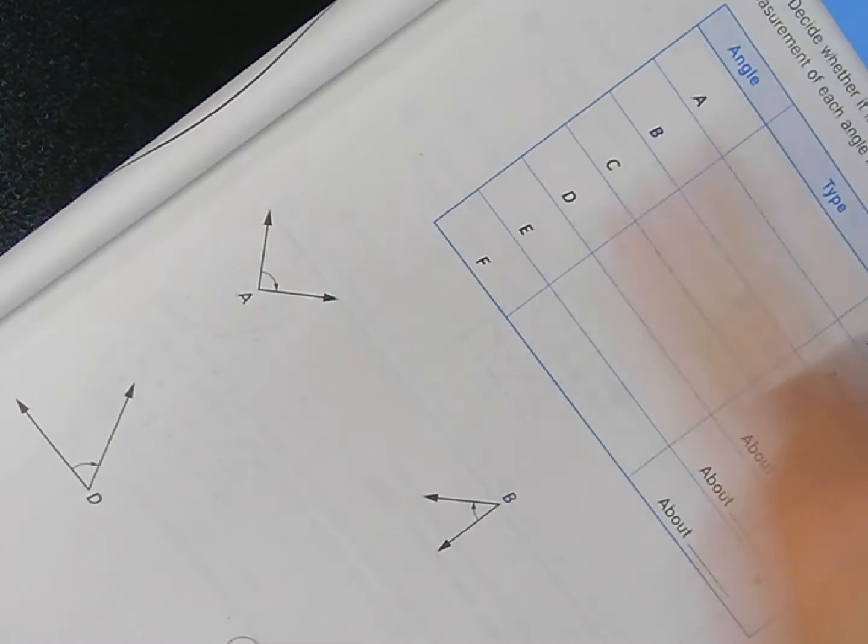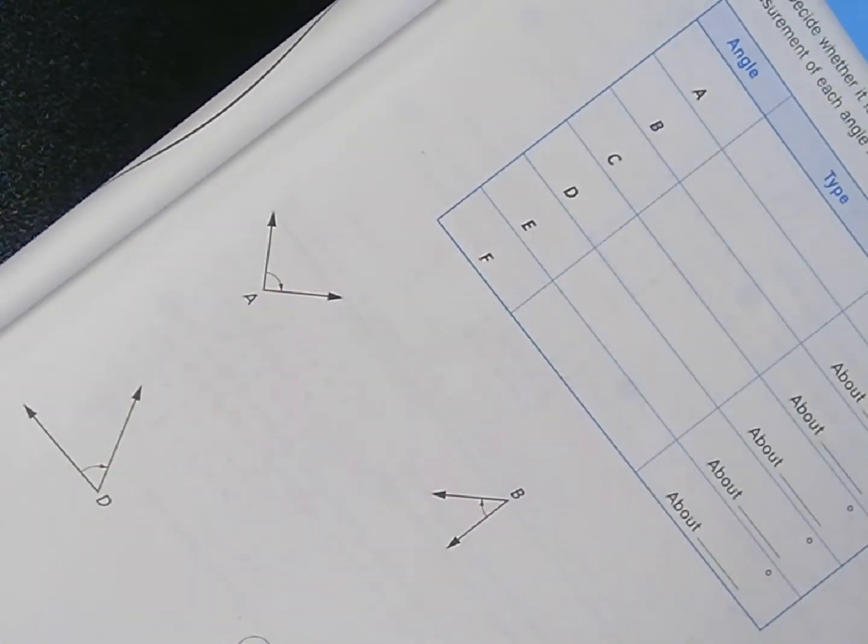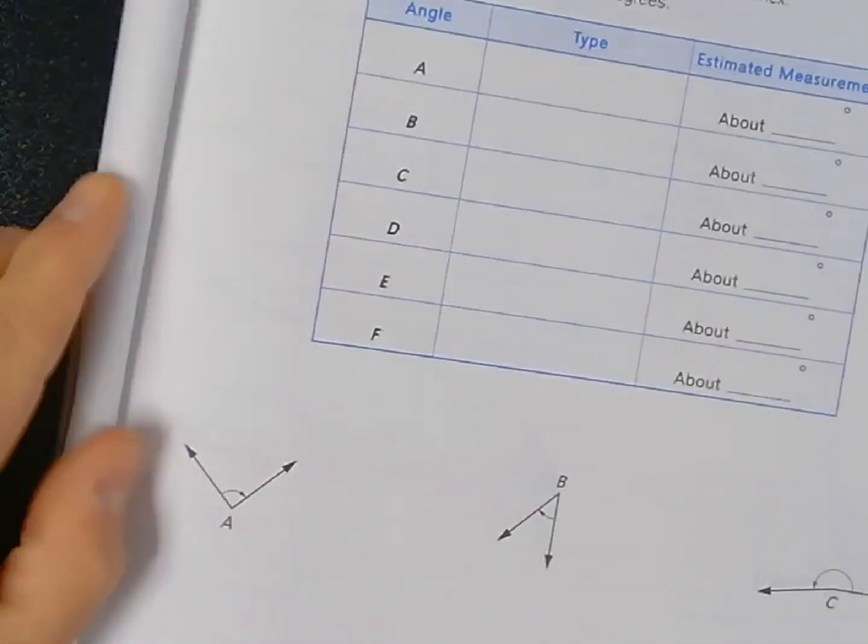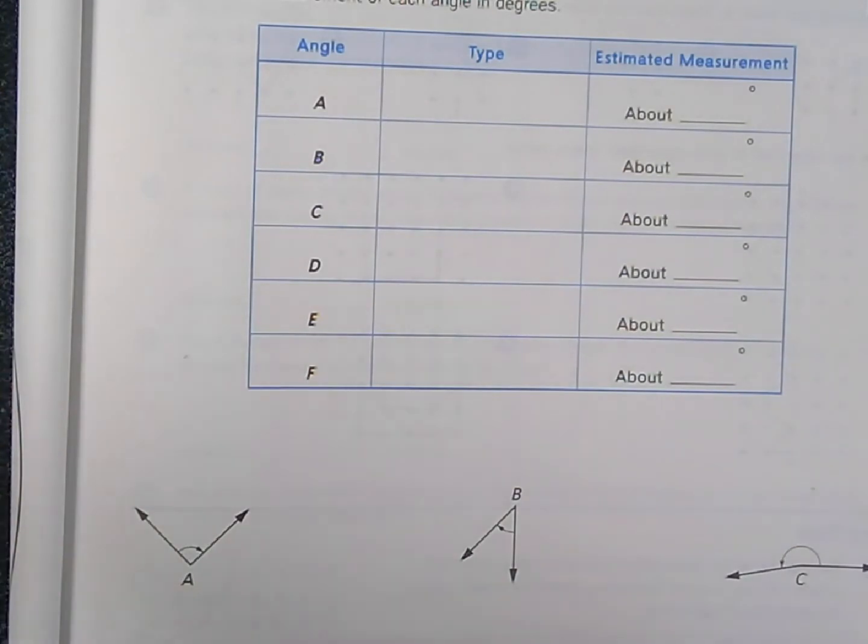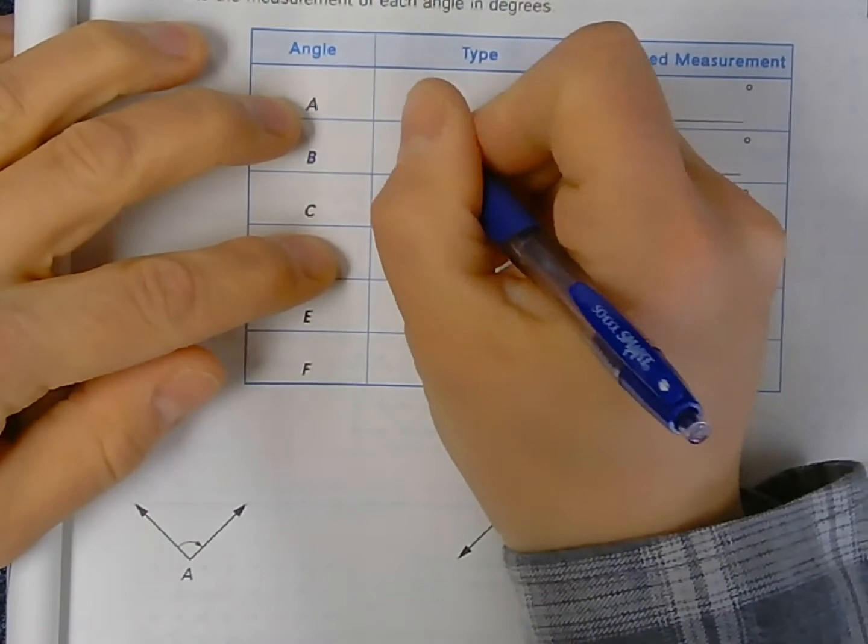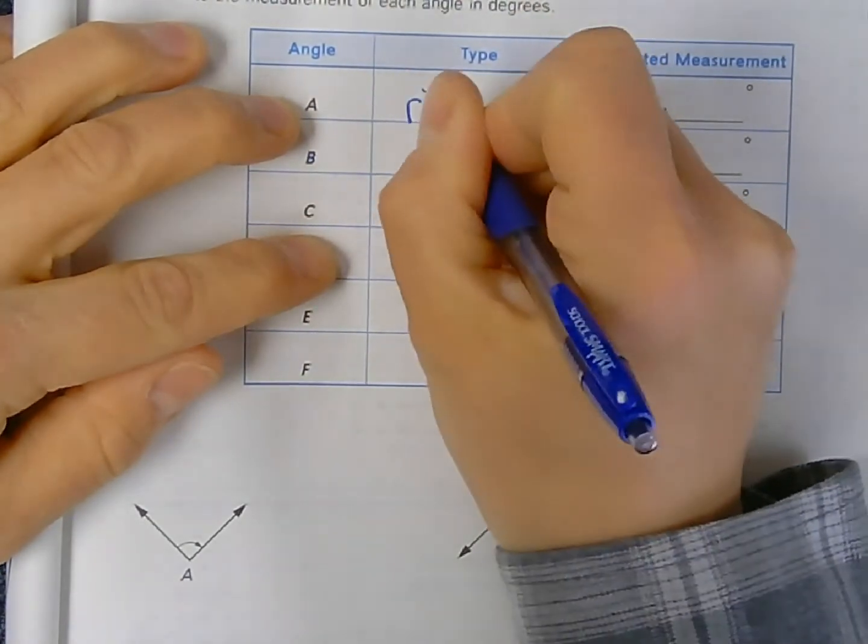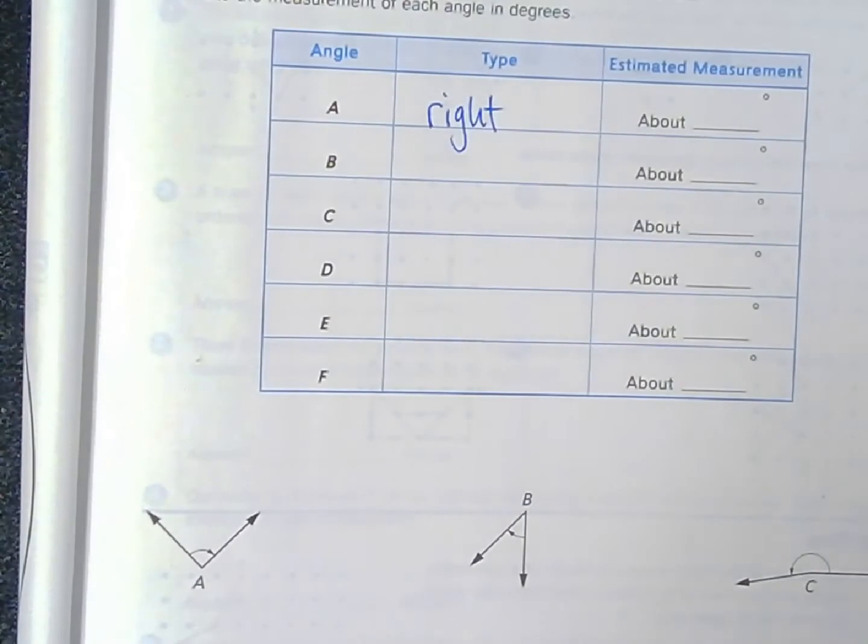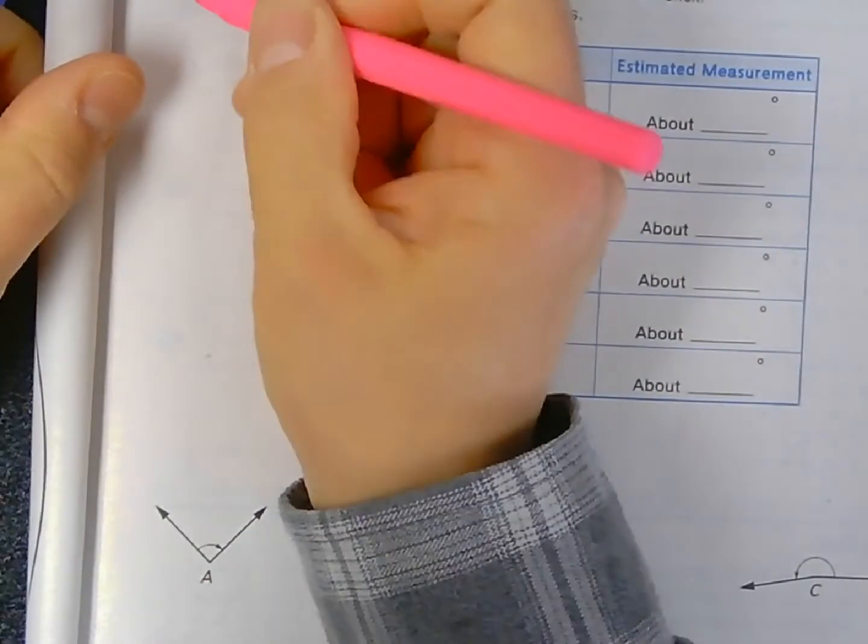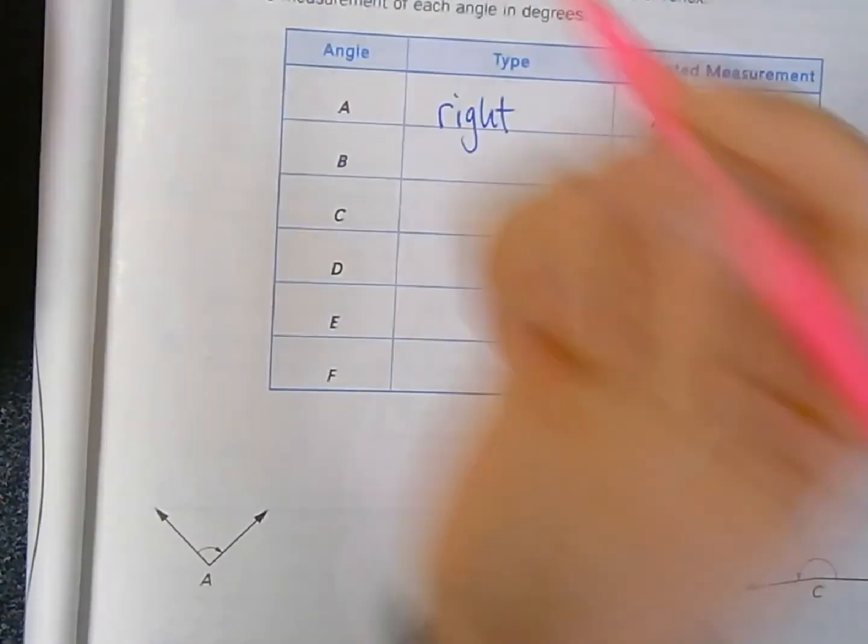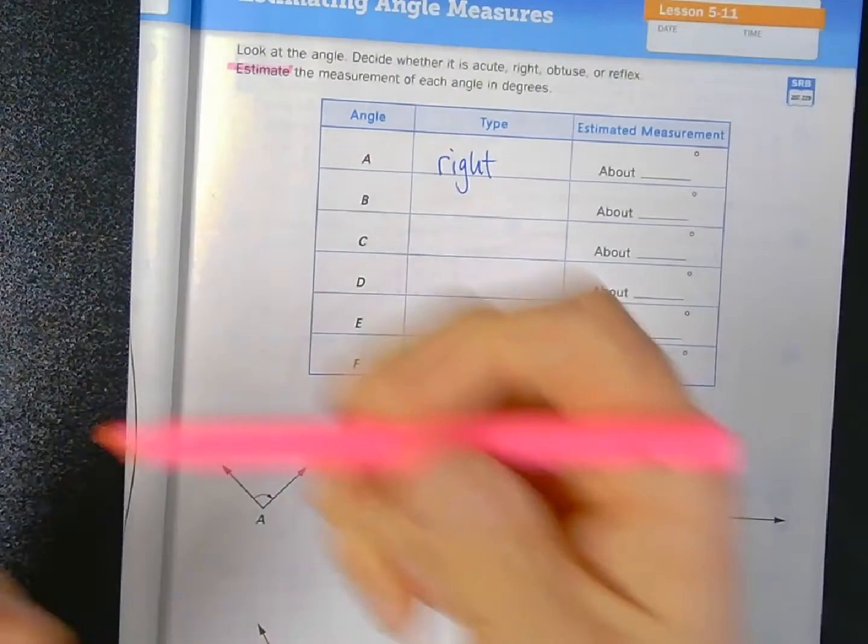Let's take a look at angle A. A looks like the letter V from this vantage point, but when I turn my notebook about 45 degrees, I can see that this angle looks like a right angle, a 90-degree angle. So angle A would be considered a right angle. When I complete my work, I'm going to write that angle A is a right angle, give or take, because we are estimating. It may be 89 degrees, it may be 92 degrees, but it's about 90 degrees.